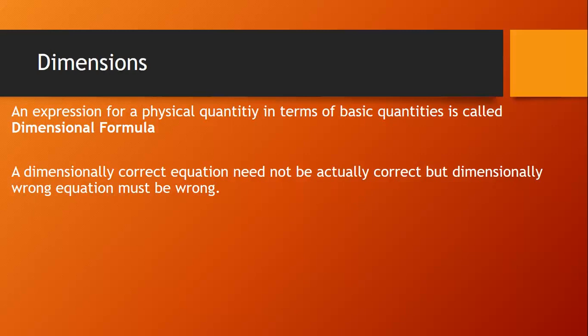While calculating the dimensional formula or dimensions for any physical quantity, pure numbers are dimensionless. Dimension does not depend on the magnitude. A dimensionally correct equation need not be actually correct, but a dimensionally wrong equation must be wrong.